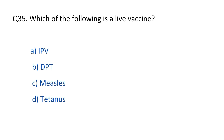Question No. 35. Which of the following is a live vaccine? The right option is C, measles.